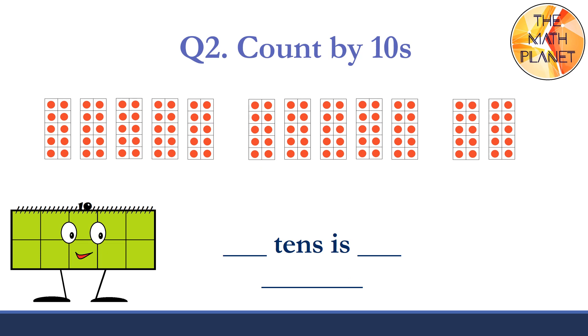Question two. Count by tens. We got five groups of ten, and five more groups of ten, and two more groups of ten. So, we got twelve tens, which is equal to 120. We will also write it in words. One O-N-E, 100 H-U-N-D-R-E-D, 20 T-W-E-N-T-Y, 120.